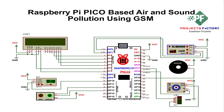The DHT11 sensor is connected to GPIO pin 10. The MQ135 sensor for air pollution is connected to GPIO 26, which is an analog pin. The sound sensor is connected to GPIO 27, another analog pin.